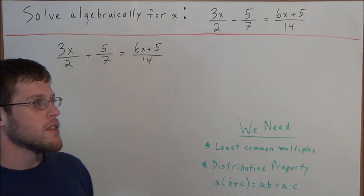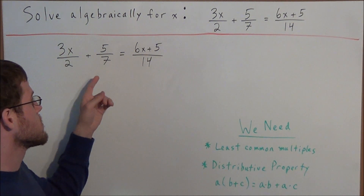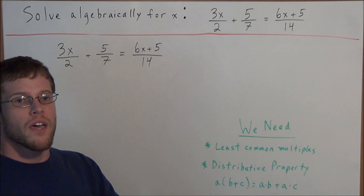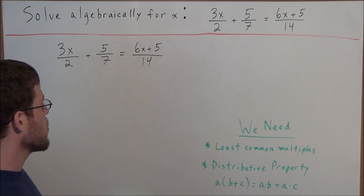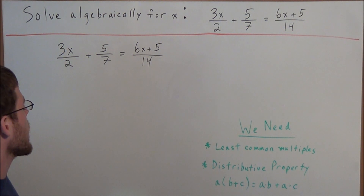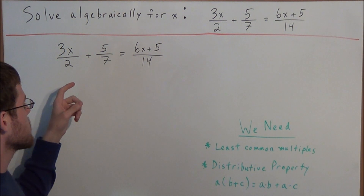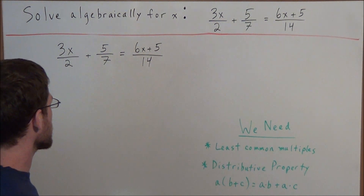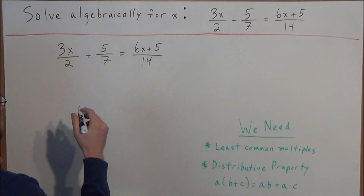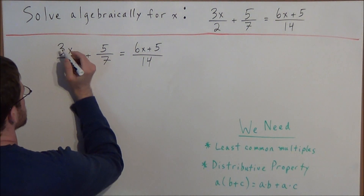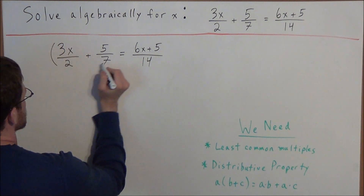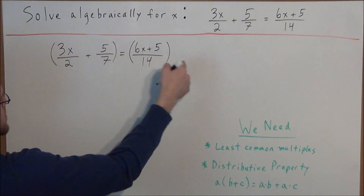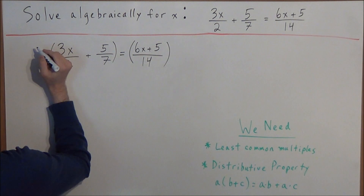For a quick recap, if we list the multiples of 7, it would be 7, 14, 21, and so on. After a little more thought, we arrive at 14 being the least common multiple of 2, 7, and 14. So we're going to multiply both sides of the equation by that least common multiple — that is, we're going to multiply both sides by 14.